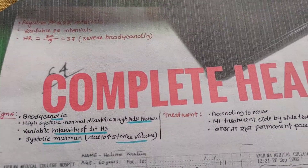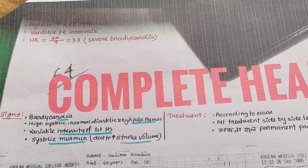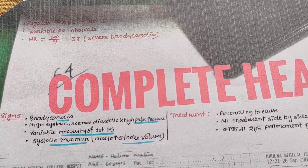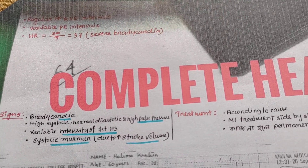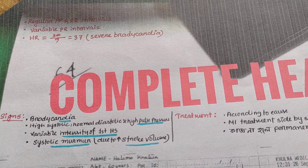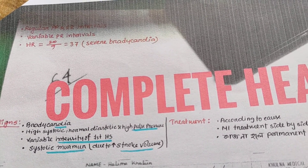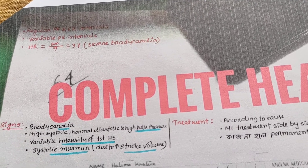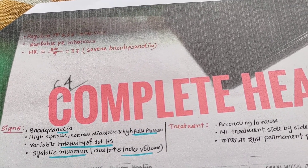So what do we do? We have a regular PP and RR interval, and an abnormal PR interval which is variable. The heart rate is 37, which is severe bradycardia.